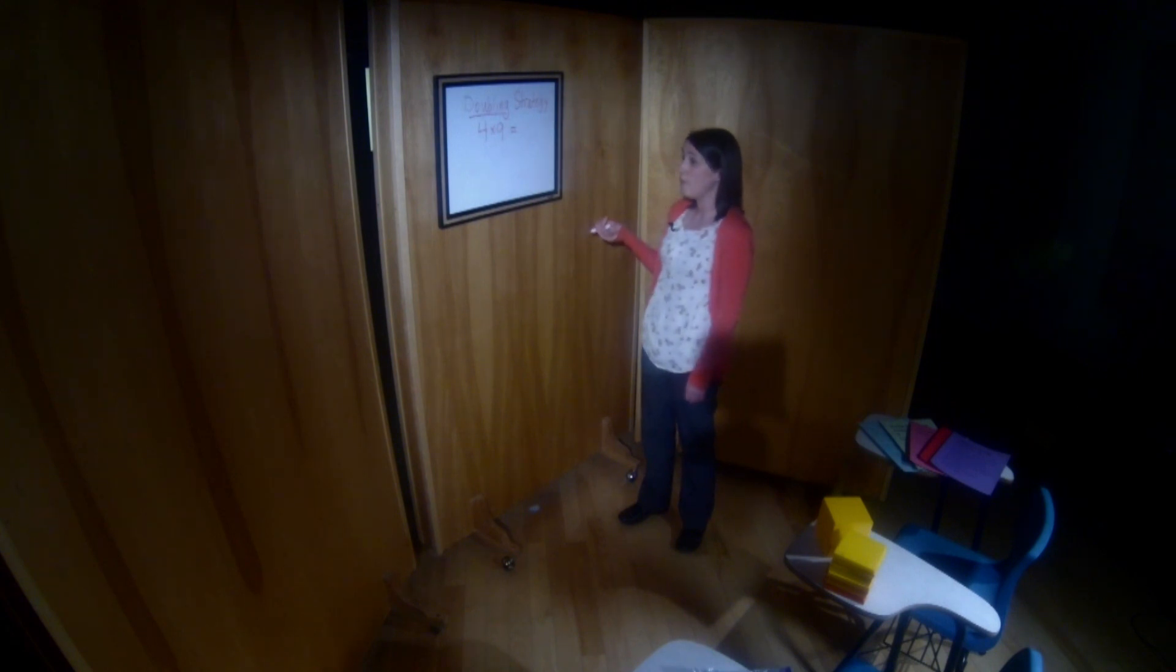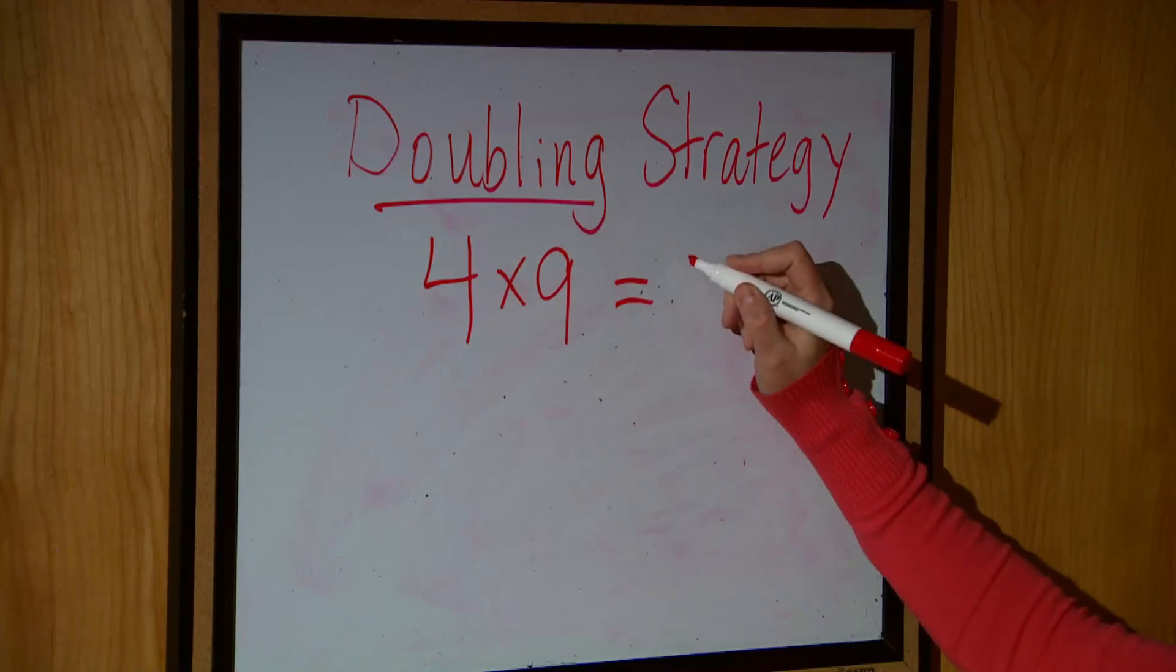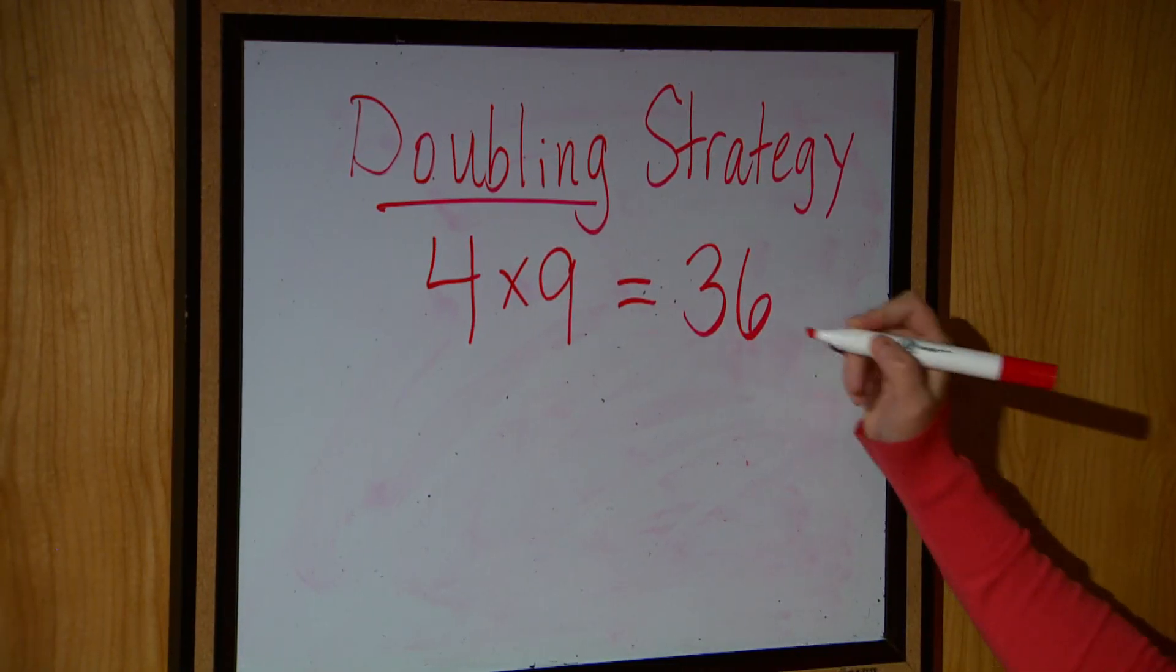And four groups of nine is a good example because kids typically know their nine times facts because we have other strategies for learning nine times facts. And a lot of them would say, okay, Miss, I know that that's 36.